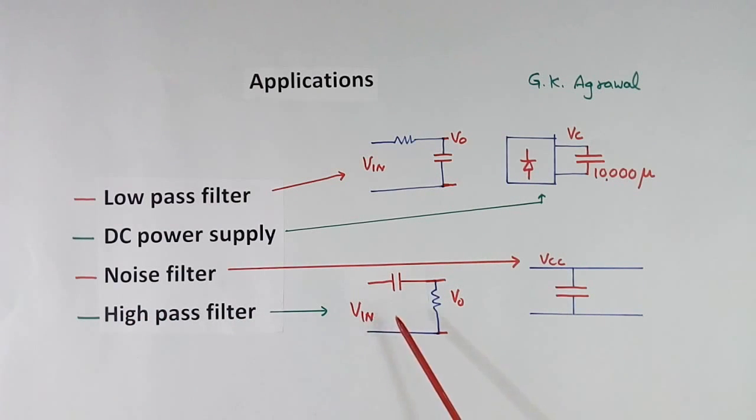This has another application, high pass filter. In this, C is here. In high pass, C will be here, resistance will be here. High pass means high frequency should pass. So when high frequency component comes, this for high frequency, this impedance will be low, so it will pass.